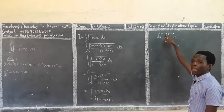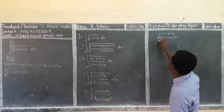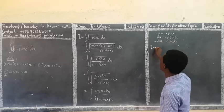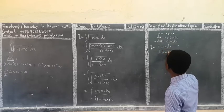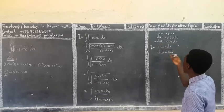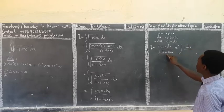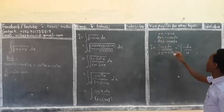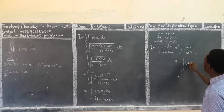Looking at our integral — which is ∫ cos x dx / (1 - sin x)^(1/2) — we can see that cos x dx = -du and (1 - sin x) = u. So substituting, the integral becomes ∫ (-du) / u^(1/2), which equals -∫ u^(-1/2) du. I can take the negative out front.